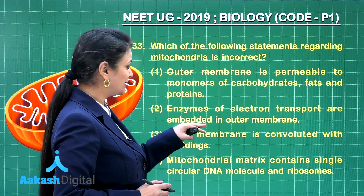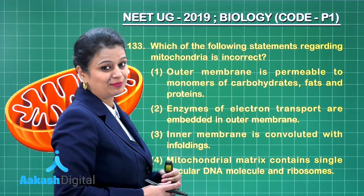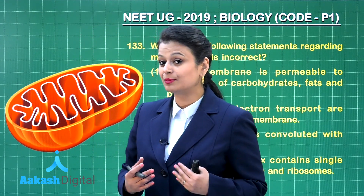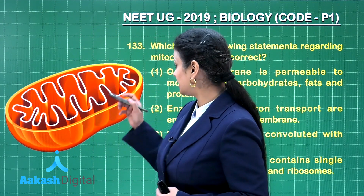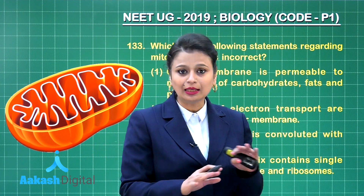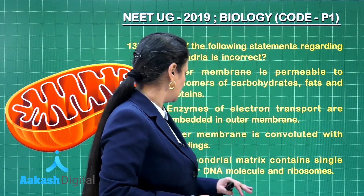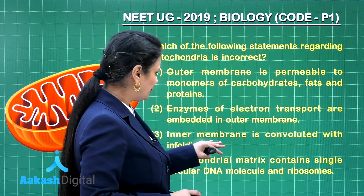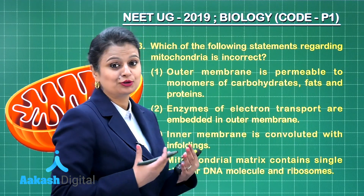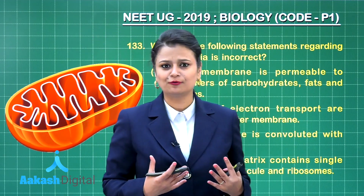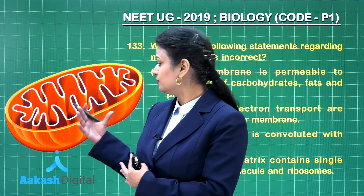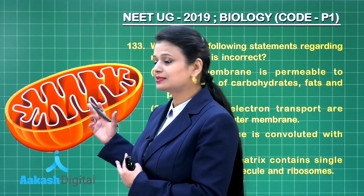Enzymes of the electron transport system (ETS) are embedded in the outer membrane — this is incorrect. The electron transport system actually occurs in the inner mitochondrial membrane. The inner membrane is convoluted with infoldings, which you can see very well in the diagram.